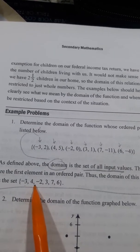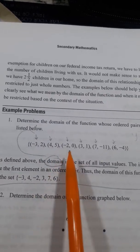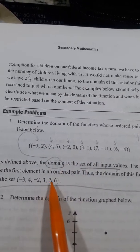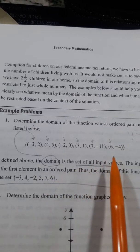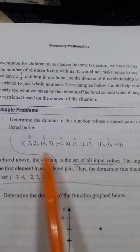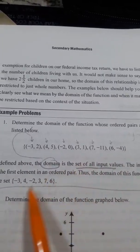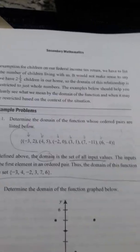Negative 3, 4, negative 2, 3, 7, and 6. So it gives you a bunch of listed ordered pairs. The domain is just the first number of each of the ordered pairs.